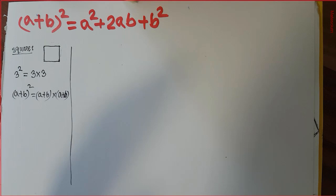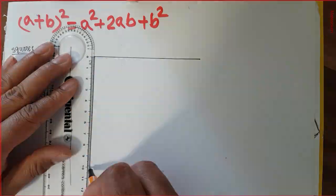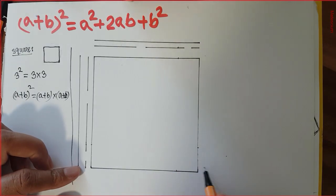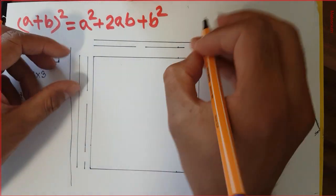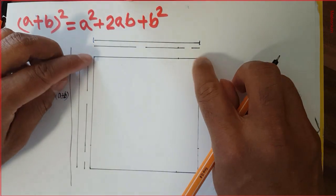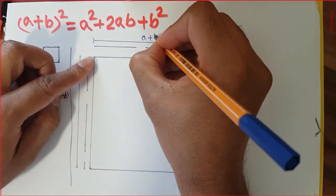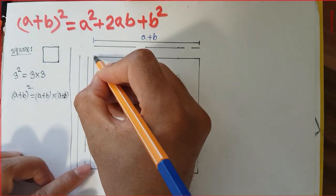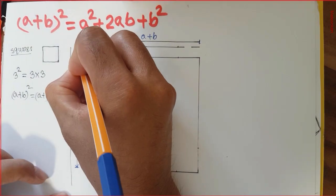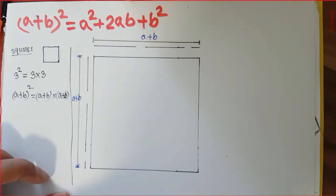To explain the origin of this formula, let me draw a square shape. This is a square shape, and let us consider the side length of this square. This side length is (a + b), which means this side length here to here is also (a + b).